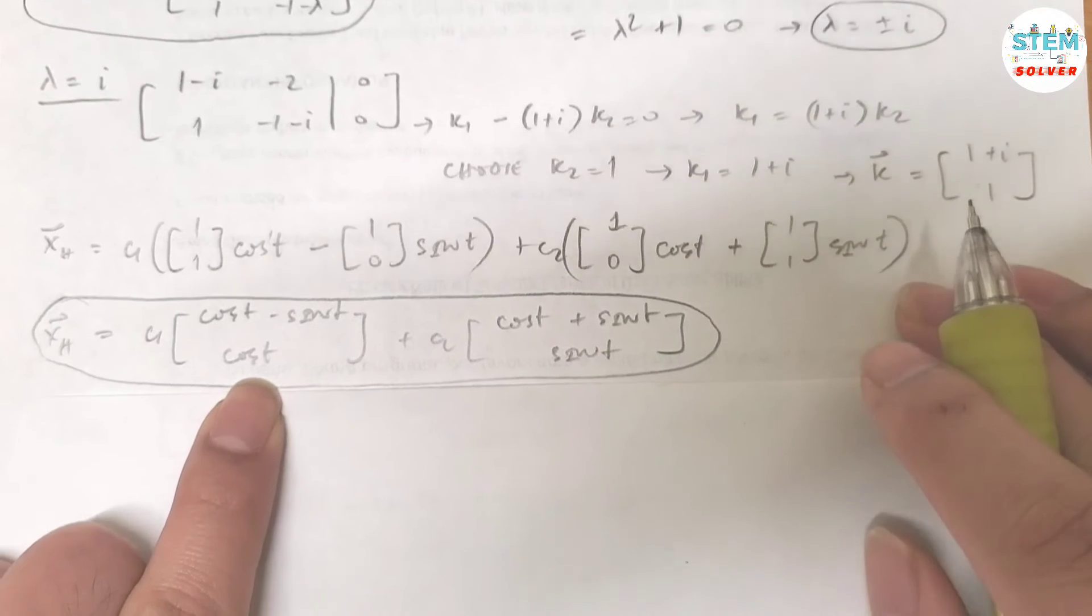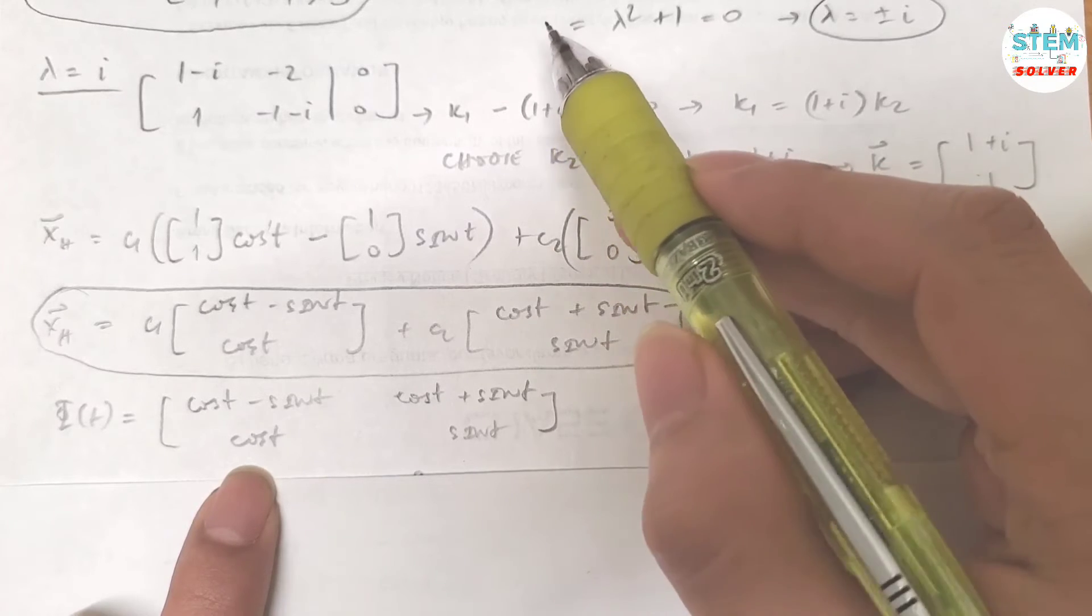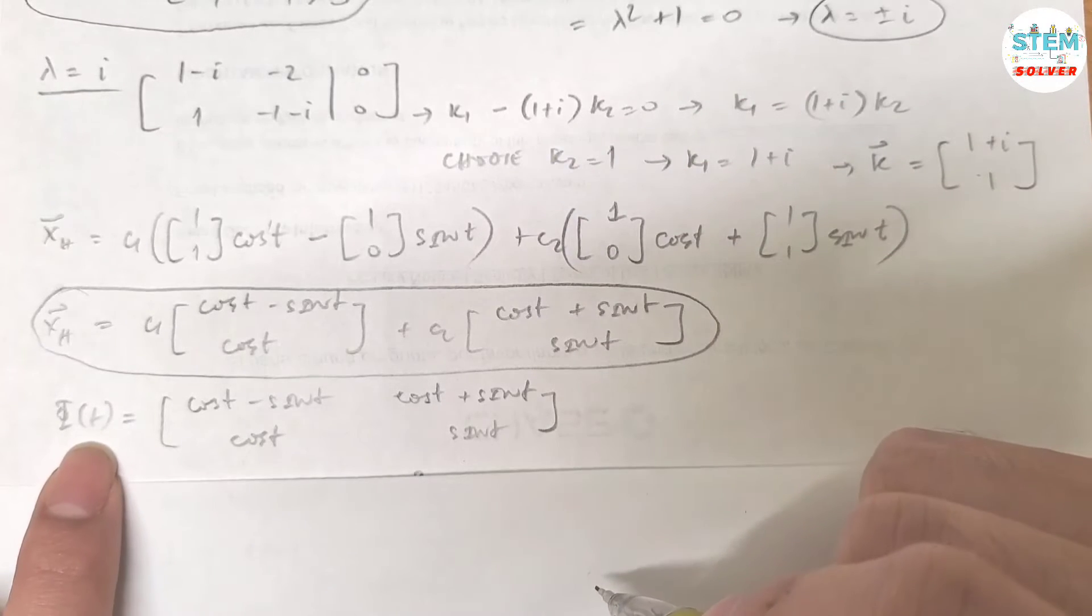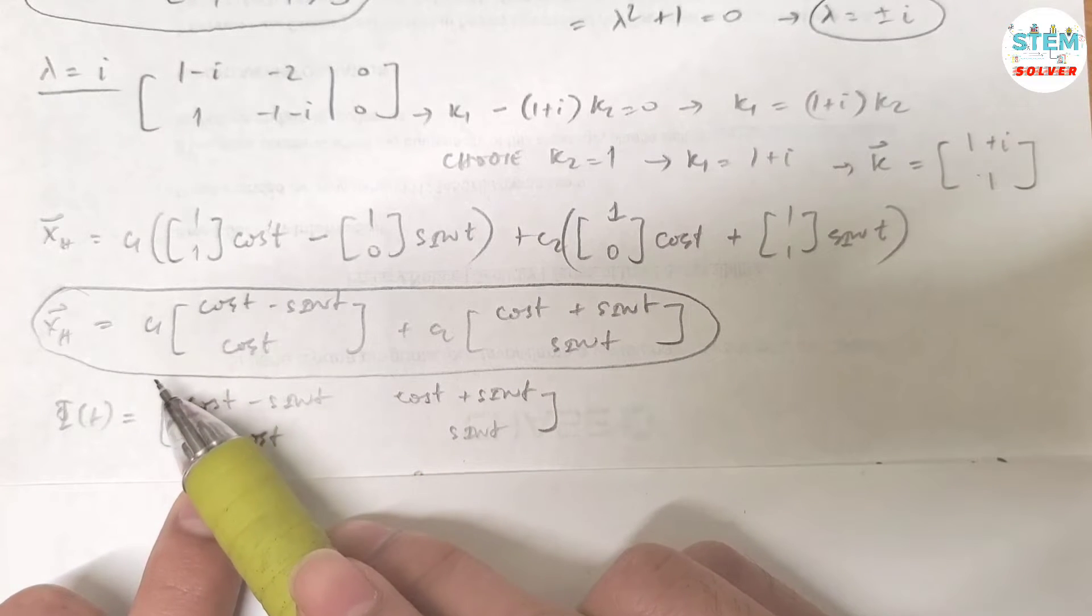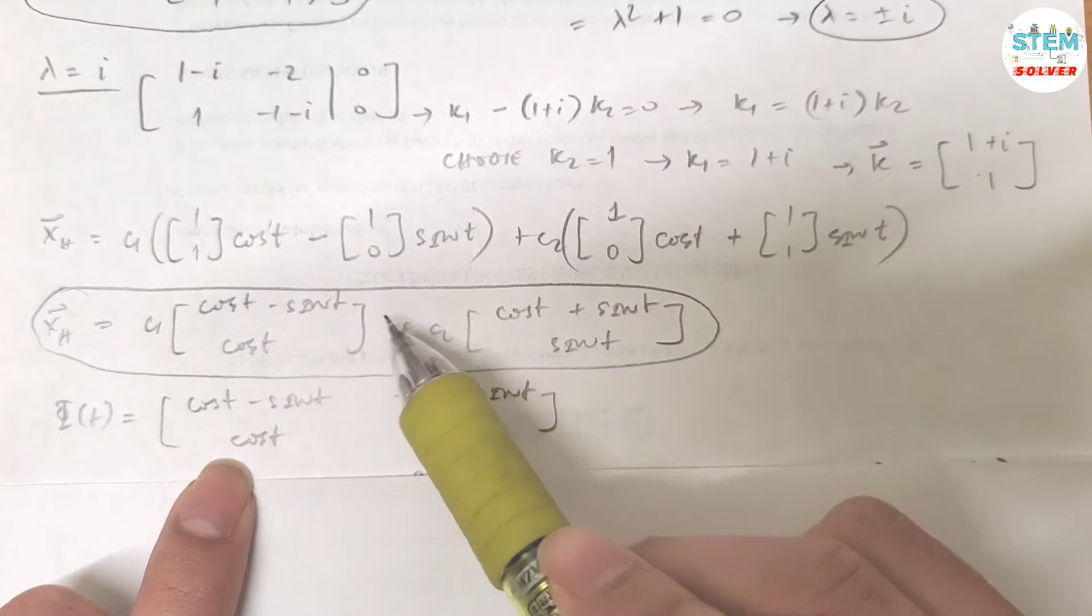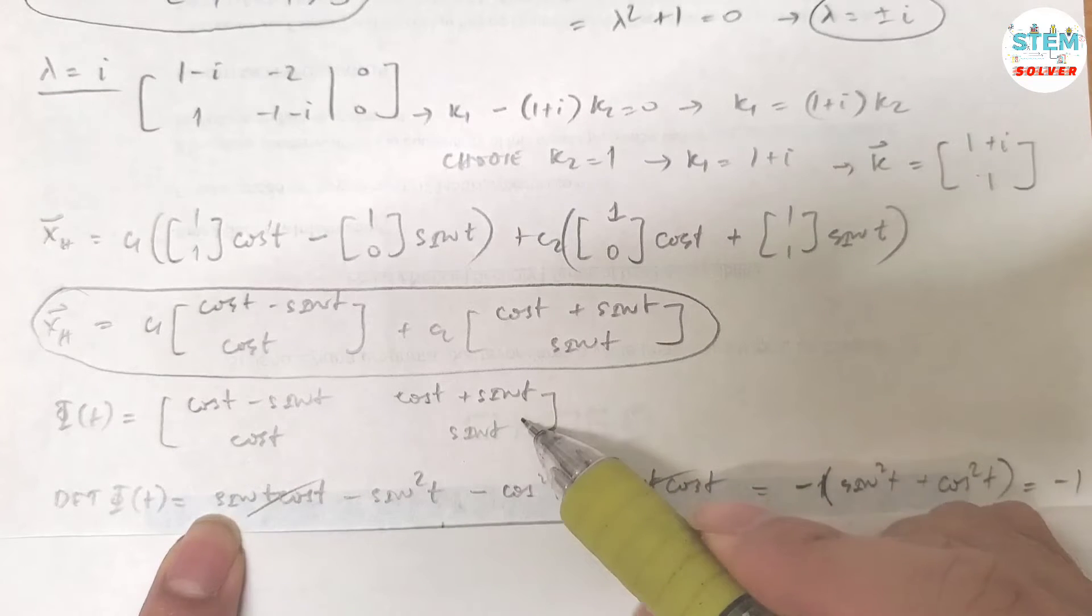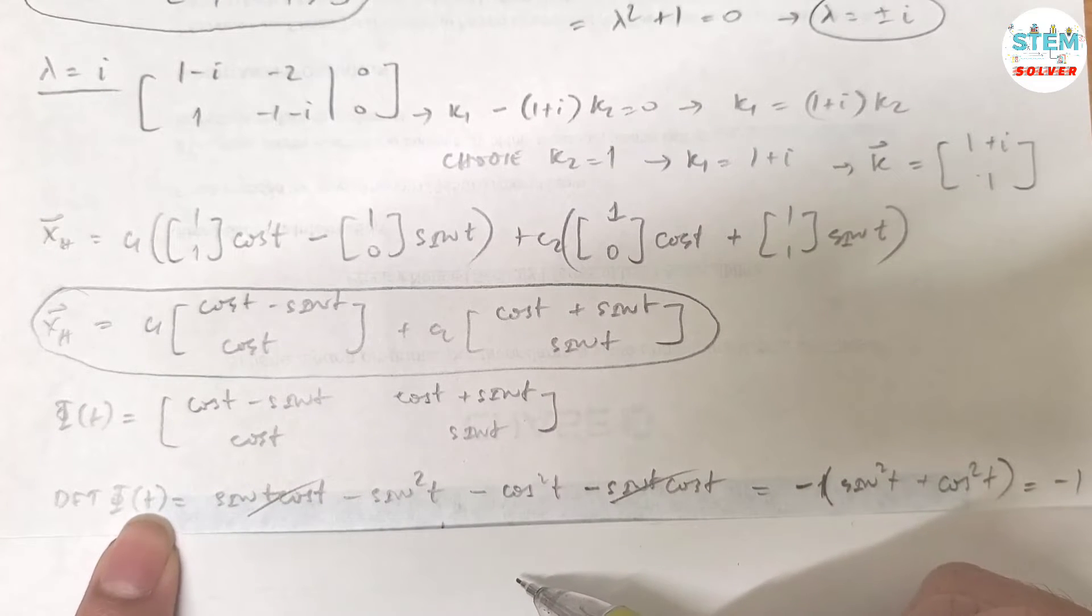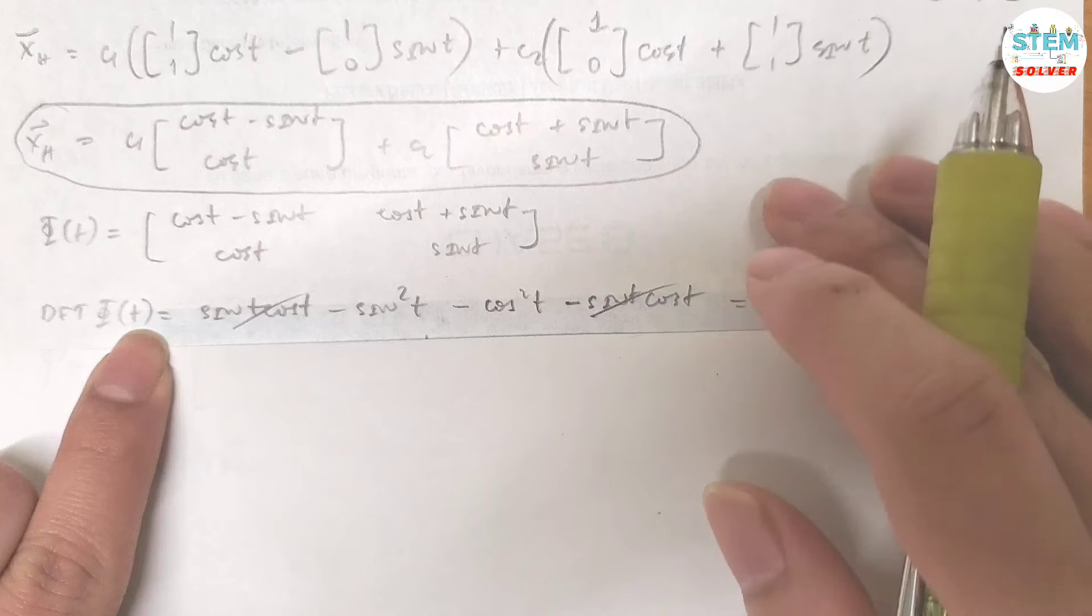Now it's time to find the non-homogeneous part. Similarly, like A minus lambda I, you need to have Φ(t). And it is obtained from the homogeneous part, where you exclude c1 and c2 and write down the rest, okay? So once you have this matrix, Φ is... Find the determinant of Φ(t), it gives you negative 1. And then you need to find its inverse.